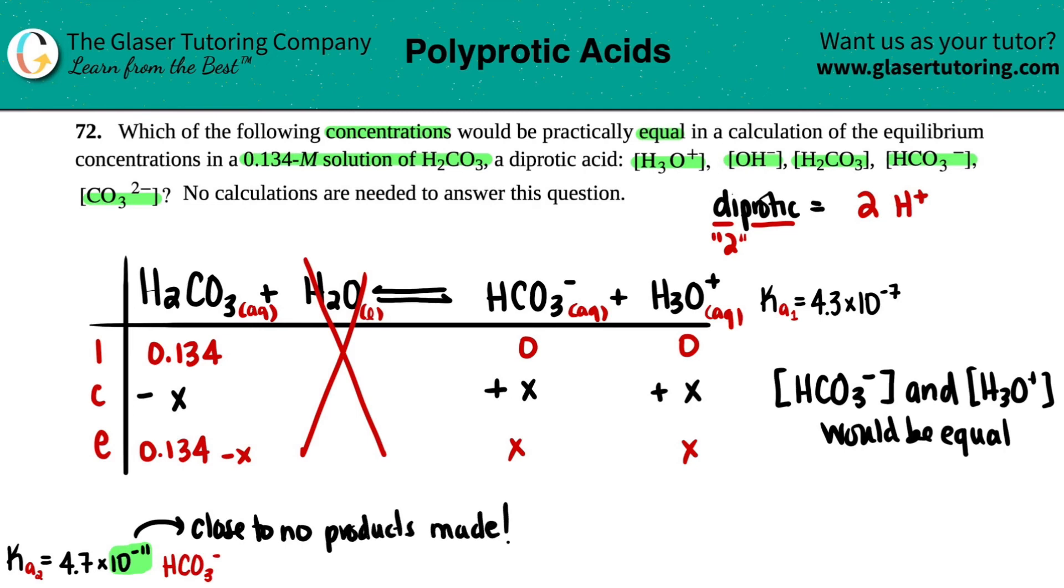And the products for HCO3 minus would again be H3O plus and then the CO3 2 minus if we actually wrote that out. But if there's no basically products being made, there's nothing really added to the H3O plus column, which also further in states that these two would be equal. And that is your final answer.